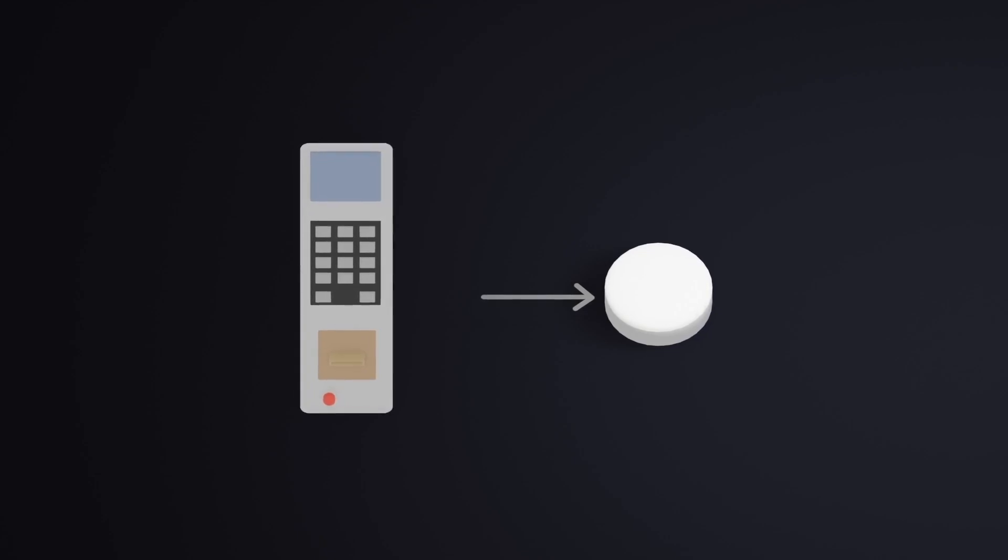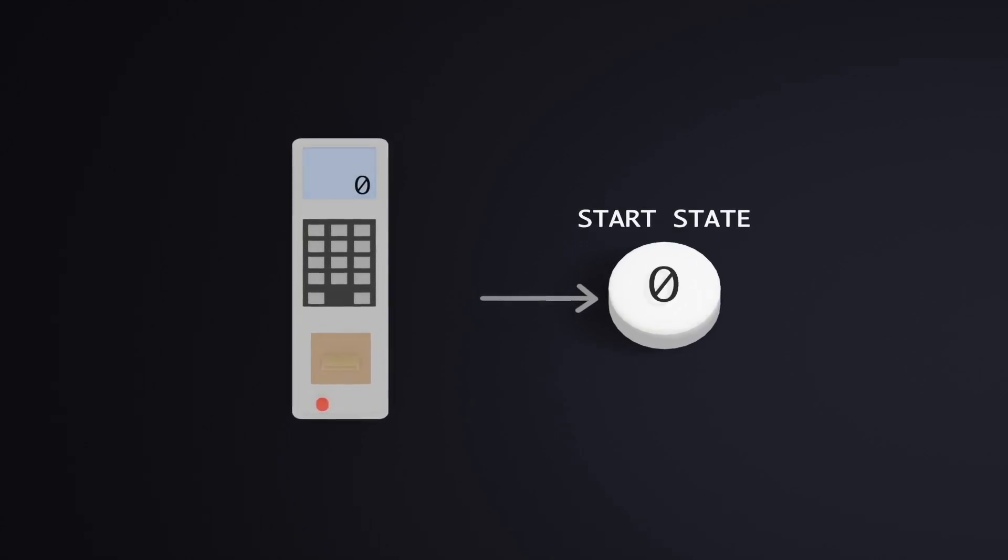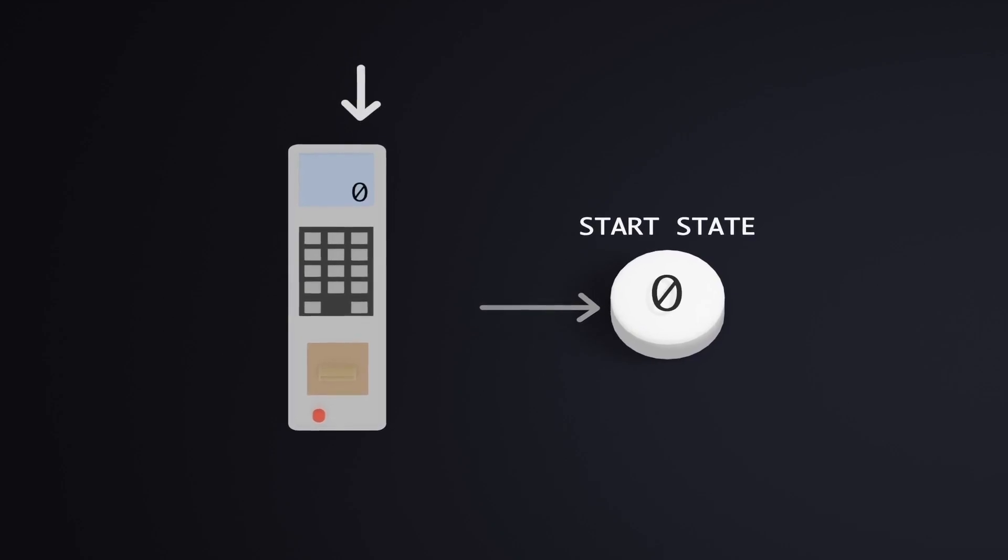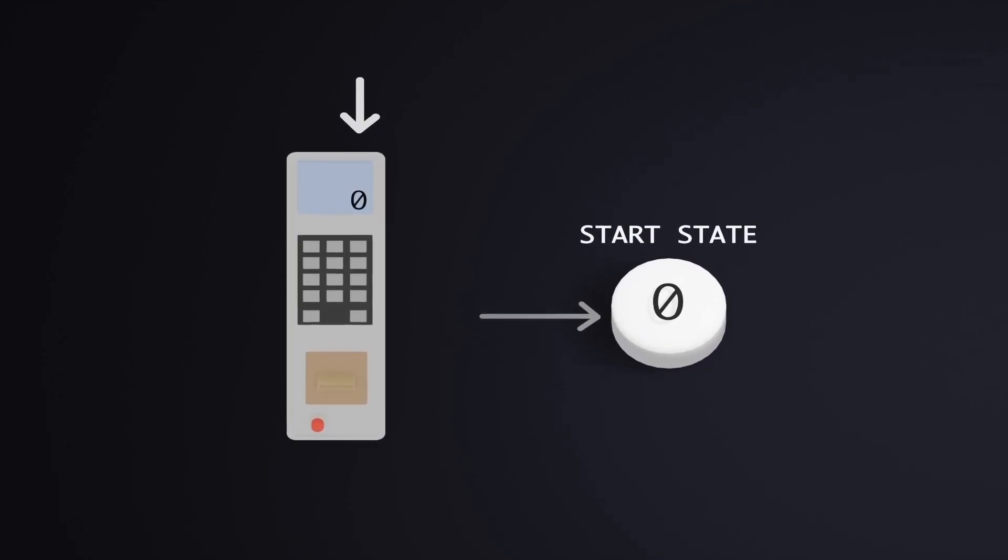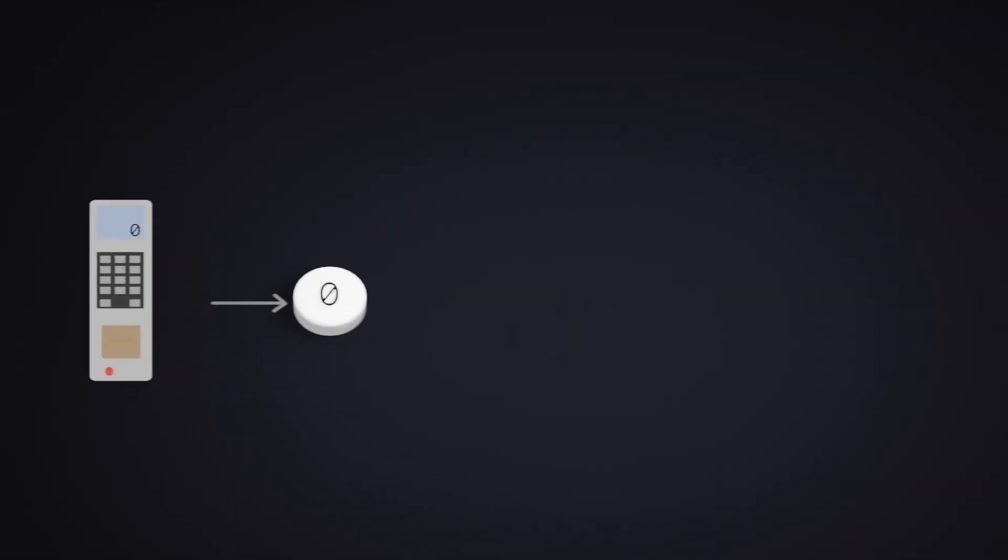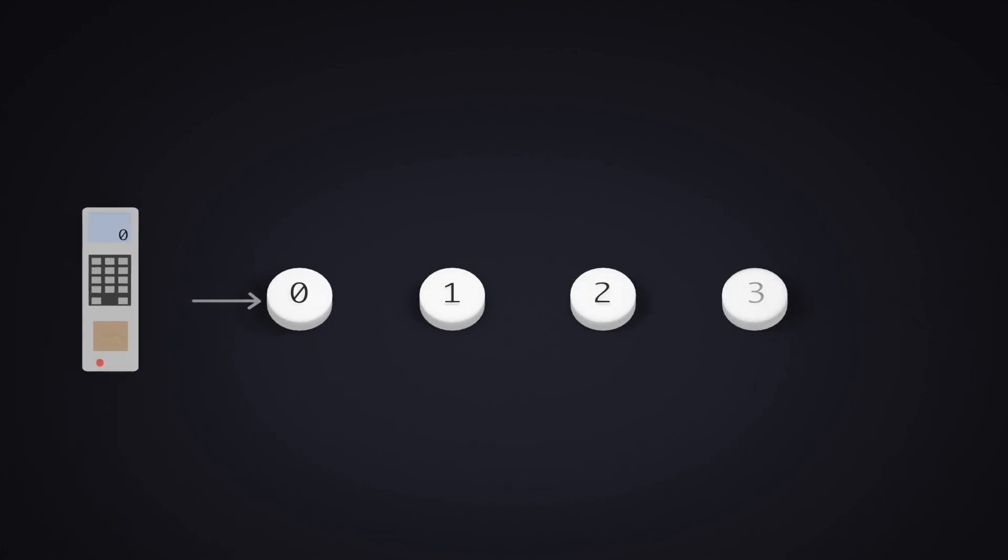To represent this behavior, we create a machine that starts from our starting state. Let's call it 0 to represent the amount of money we have put into the machine. We have a state for each dollar increment, until $3, which is the cost of the coffee itself.